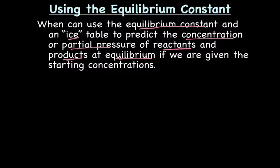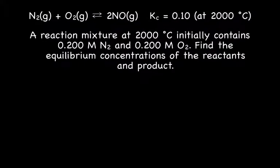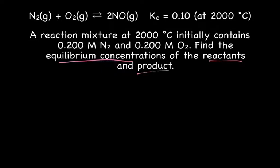Let's try a practice problem. We have nitrogen gas and oxygen gas reacting to form NO2. We know that the equilibrium constant KC is 0.01 at 2,000 degrees Celsius. We know the initial concentrations — we have 0.2 molar of both N2 and O2. What we want to do is find the equilibrium concentrations of all the reactants and products.